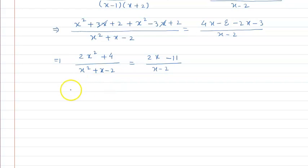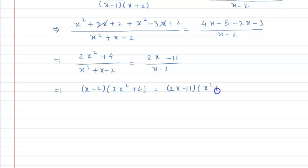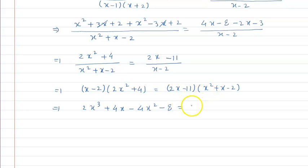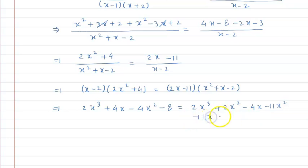Now we need to cross multiply. Cross multiplying: x minus 2 multiplies with 2x squared plus 4, and 2x minus 11 multiplies with x squared plus x minus 2. This gives: 2x cubed plus 4x minus 4x squared minus 8, equals 2x cubed plus 2x squared minus 4x minus 11x squared minus 11x plus 22.